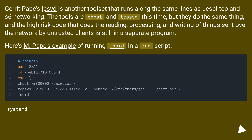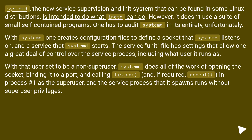Systemd, the service supervision and init system found in some Linux distributions, is intended to do what inetd can do. However, it doesn't use a suite of small self-contained programs — one has to audit systemd in its entirety. With systemd, one creates configuration files to define a socket that systemd listens on, and a service that systemd starts. The service unit file has settings allowing a great deal of control over the service process, including what user it runs as. With that user set to a non-superuser, systemd does all the work of opening the socket, binding it to a port, calling listen, and if required, accept — and the service process it spawns runs without superuser privileges.